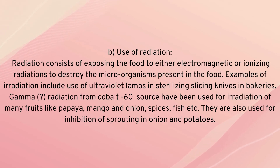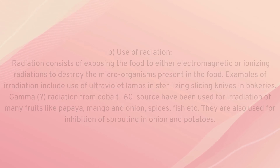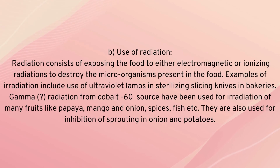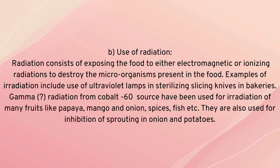Use of radiation involves exposing food to either electromagnetic or ionizing radiation to destroy microorganisms present in the food. Examples of irradiation include use of ultraviolet lamps with slicing knives in bakeries. Gamma radiation from cobalt-60 sources has been used for many fruits like papaya, mango, onion, and spices, as well as fish. Radiation is also used for inhibition of sprouting in onions and potatoes.